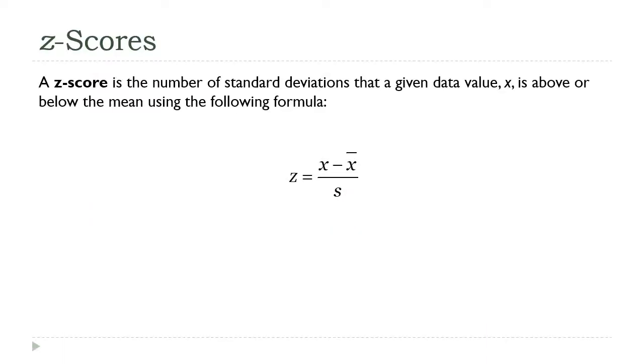Another way we can locate a data value within the larger data set is with this calculation we've seen before. It's something called a z-score.